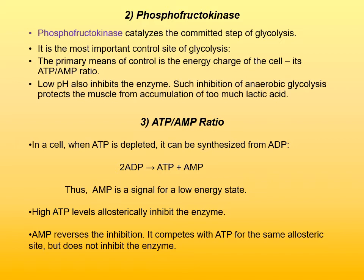ATP and AMP both affect phosphofructokinase. High ATP levels allosterically inhibit phosphofructokinase because the energy state of the cell is high and glycolysis should stop — no more energy is needed. On the other hand, AMP reverses the inhibition; it competes with ATP for the same allosteric site of the enzyme. When ATP binds to the allosteric site, it changes the shape of phosphofructokinase and prevents further phosphorylation of fructose-6-phosphate. AMP reverses that inhibition — it binds to the same allosteric site without changing the shape of the enzyme, allowing the enzyme to continue phosphorylation of fructose-6-phosphate to fructose-1,6-bisphosphate.